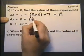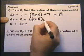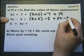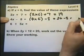4x means 4 multiplied by x. And if x is 6, minus 8. So this is 4 times 6 is 24 minus 8, which is 16.